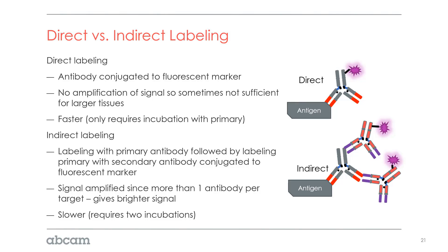The problem with primary labeling is that for thicker tissues, you're not going to get enough signal the deeper you go. You might get labeling to a millimeter in depth, but only have enough signal above background noise for 100 or 200 microns of depth. So practically speaking, we always try to go with secondary labeling. Though it reduces throughput, it dramatically improves signal intensity and image quality because we have a much higher signal-to-background ratio. Indirect labeling requires two steps, but the signal is much, much better.